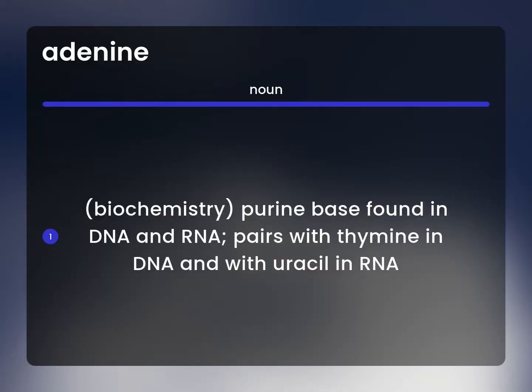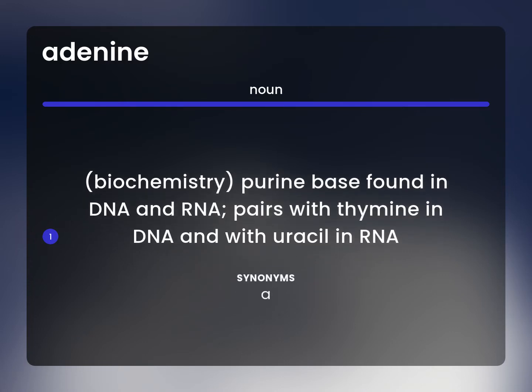Biochemistry. A — purine base found in DNA and RNA. Pairs with thymine in DNA and with uracil in RNA.